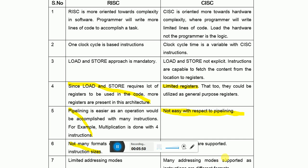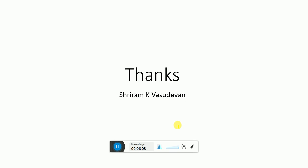That's it — it's a very simple topic. CISC is complexity for the hardware; RISC is complexity for the software. When you take RISC, you may have to write more lines of code. When you take CISC, you write a limited number of lines of code. Thank you very much. I look forward to seeing you again in the next lecture.